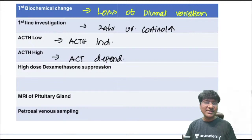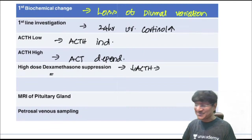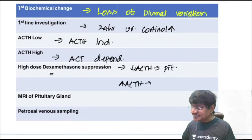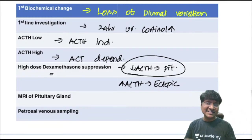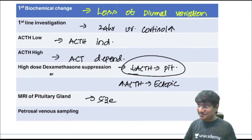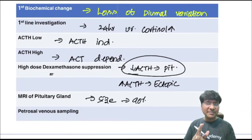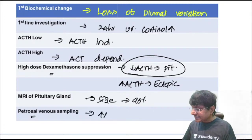High-dose dexamethasone test differentiates pituitary ACTH from ectopic ACTH: if ACTH levels reduce, it is pituitary adenoma; if ACTH levels remain high, it is ectopic ACTH. MRI of pituitary is done (90% sensitivity) to determine tumor size. In the 10% where MRI is normal despite pituitary adenoma, petrosal venous sinus sampling is needed.